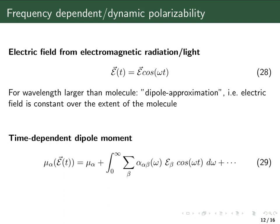An electromagnetic wave moves through space, so in principle there should also be some dependence on position in space in this expression for the electric field of electromagnetic radiation. But I'm going to make here what is called the dipole approximation or the long wavelength approximation, which means that for the very small dimension of a molecule the electric field is constant over the extent of the molecule. That's a good approximation as long as the wavelengths we are looking at are larger than the spatial extent of a molecule.